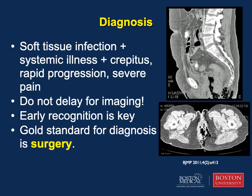If the suspicion is high for necrotizing soft tissue infection or fasciitis, such as if the patient has crepitus or necrosis on examination or there is rapid progression of clinical manifestations, immediate surgical consultation and treatment is necessary even without imaging. If imaging is performed, plain radiographs may show subcutaneous emphysema, though this finding is highly specific to Clostridia species. A CT scan, as shown in this slide, is more sensitive but lacks specificity. It can reveal fluid collections, tissue stranding, and gas formation.